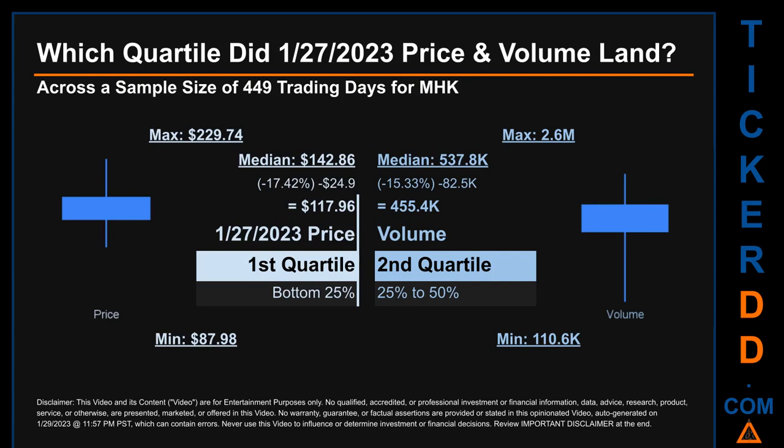The day's volume landed within the second quartile — that is, within the 25% to 50% range of all sampled daily volume — which saw a max daily volume of 2.6 million and a minimum of 110,600. Quartiles tell us about the spread of a data set by breaking it into quarters, just like how the median breaks the set into half. Descriptively, MHK has a median price of $142.86; therefore, January 27, 2023's price was lower from that middle marker by 17.42%. The day's volume of 455,400 was less than the median by 15.33%.